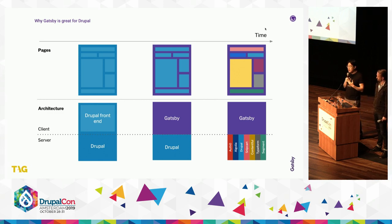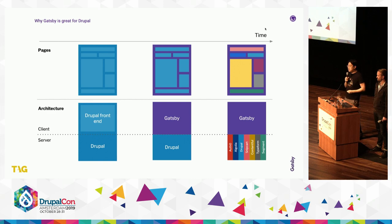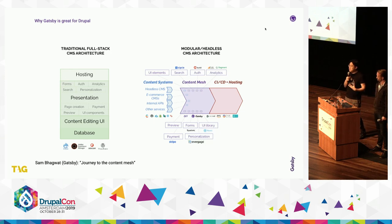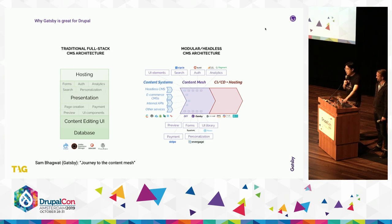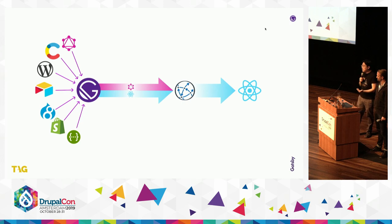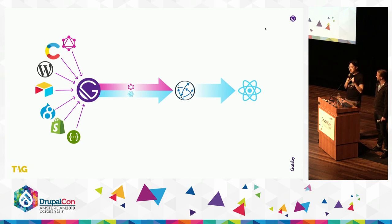Over time, as a result of this evolution towards Gatsby, you're no longer tied to relying solely on Drupal. You can use the tool that's right for the job. If there's a content mesh blog post series by Sam Pogwat called Journey to the Content Mesh, I highly recommend taking a look at that. Gatsby provides an incredible integration layer between all of these different services. It provides an agnostic GraphQL API that allows you to query data regardless of where it comes from — using a single approach so you get just the data you need, no more, no less.